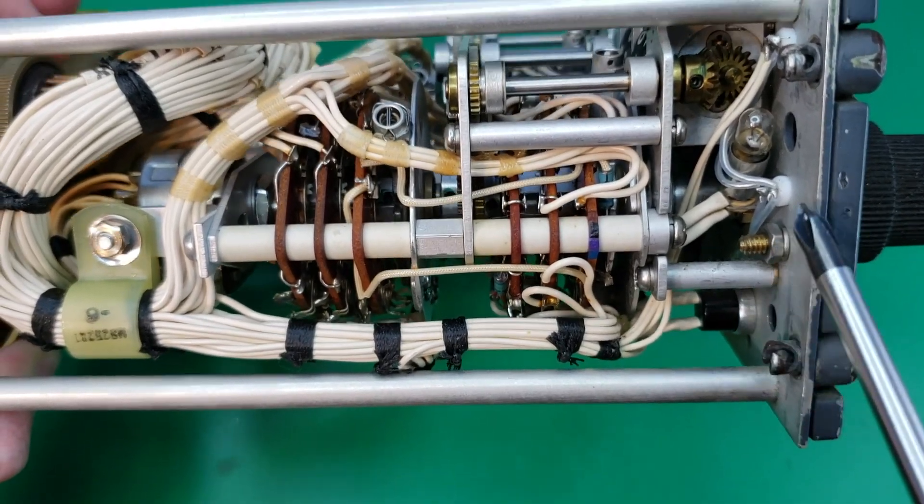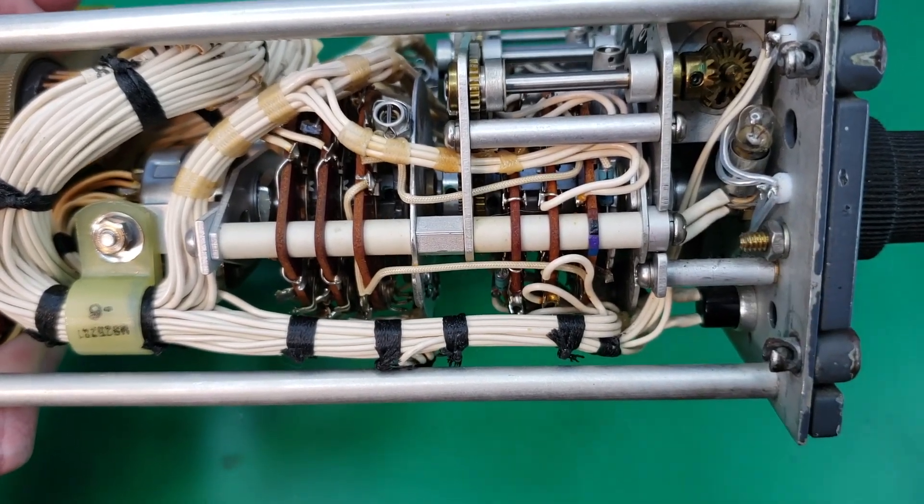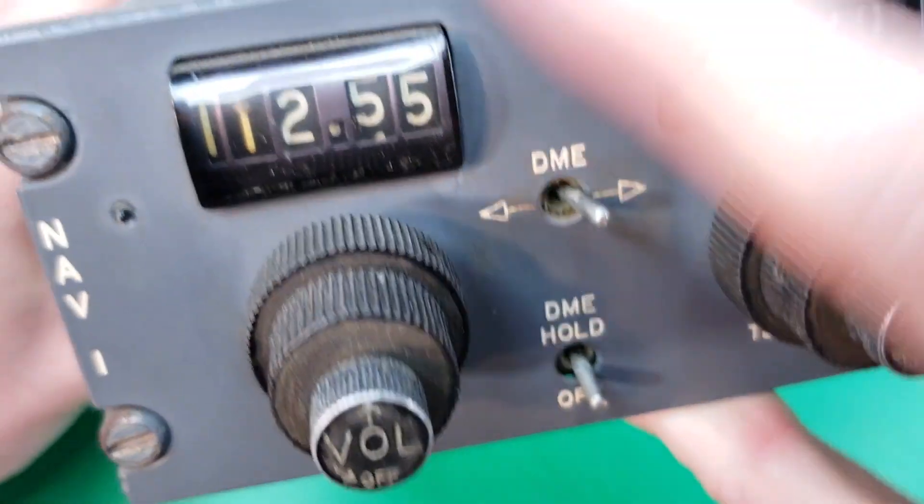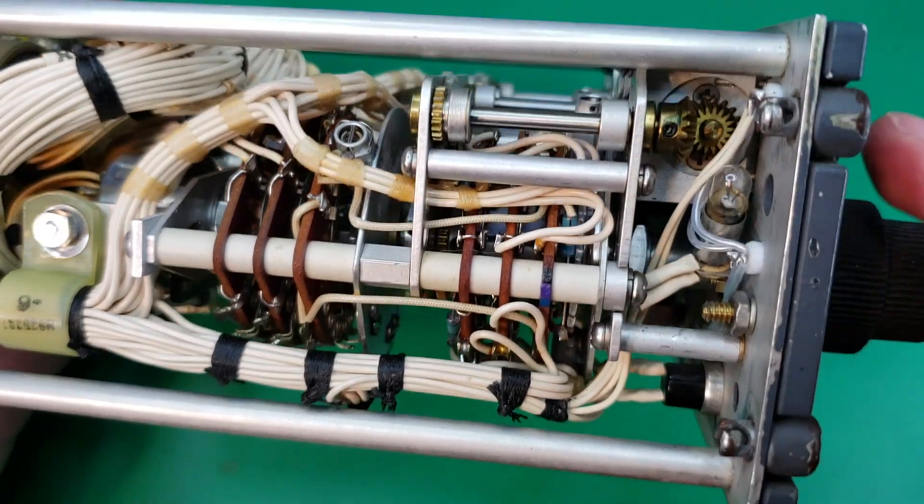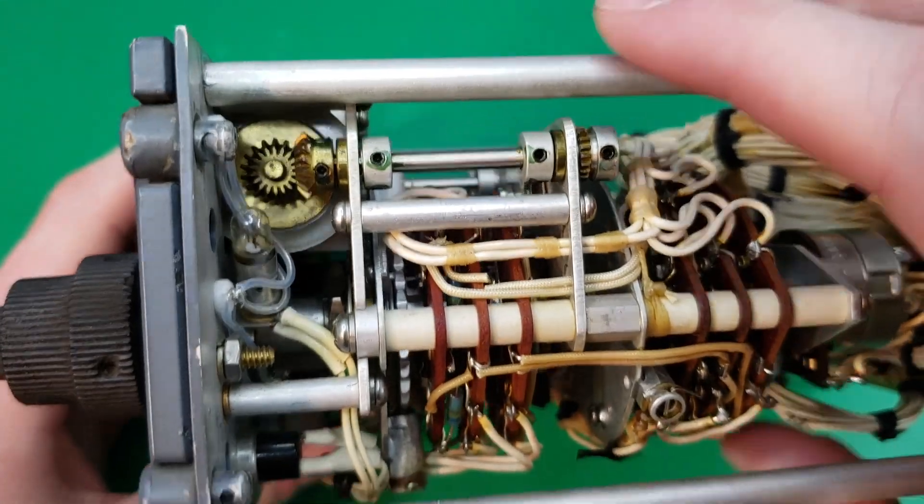Behind the front panel on each side, we have these small incandescent bulbs, which illuminate an indicator light right here. And we also have the same thing on the other side over here.